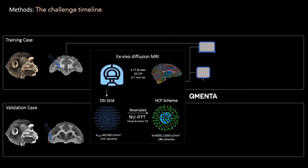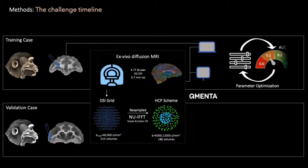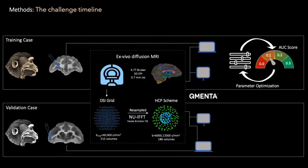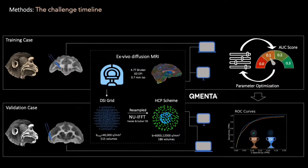Data were shared through the Qmenta platform at two different time points. We first shared the training dataset that participants could use to test and optimize their methods. Only in a second moment did we release the validation data and this time participants were blind to their score. We then evaluated all final submissions and ranked them differently on the basis of the scheme used.